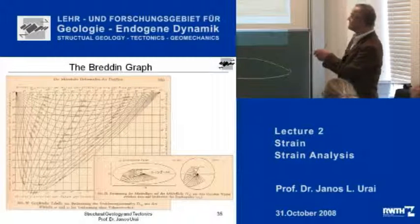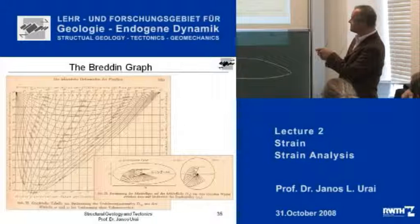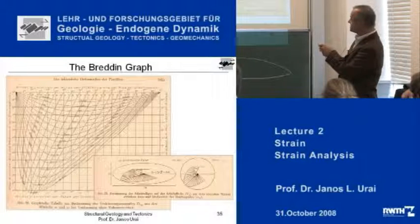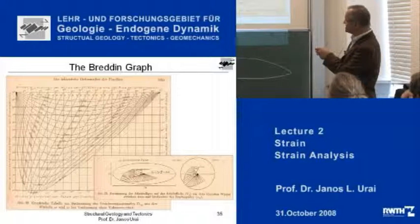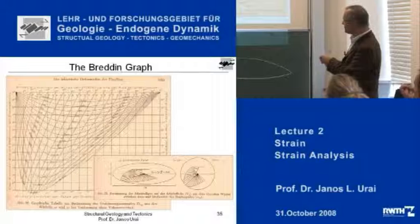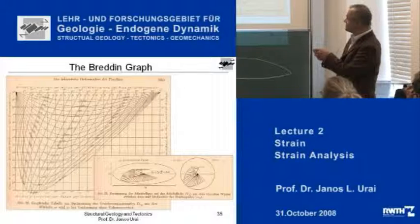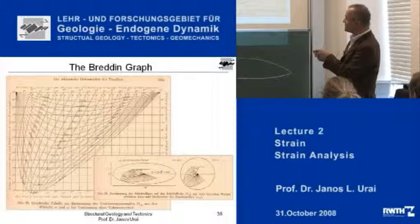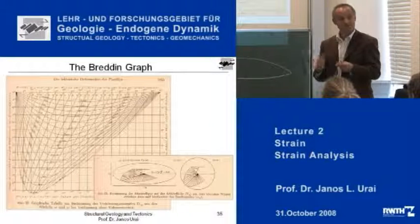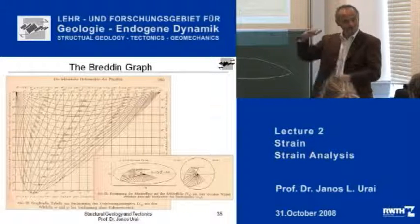He produced a line for each of these angles and he plotted the different shear angles for all the different orientations. So every line here represents one ellipse, more and more flattened.